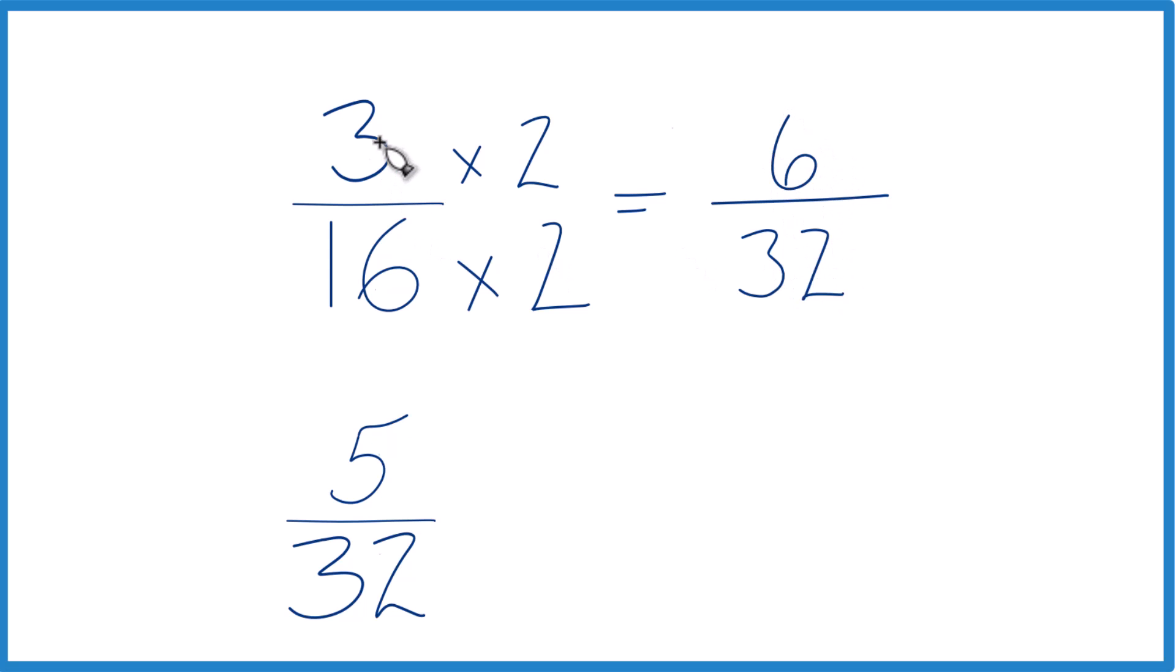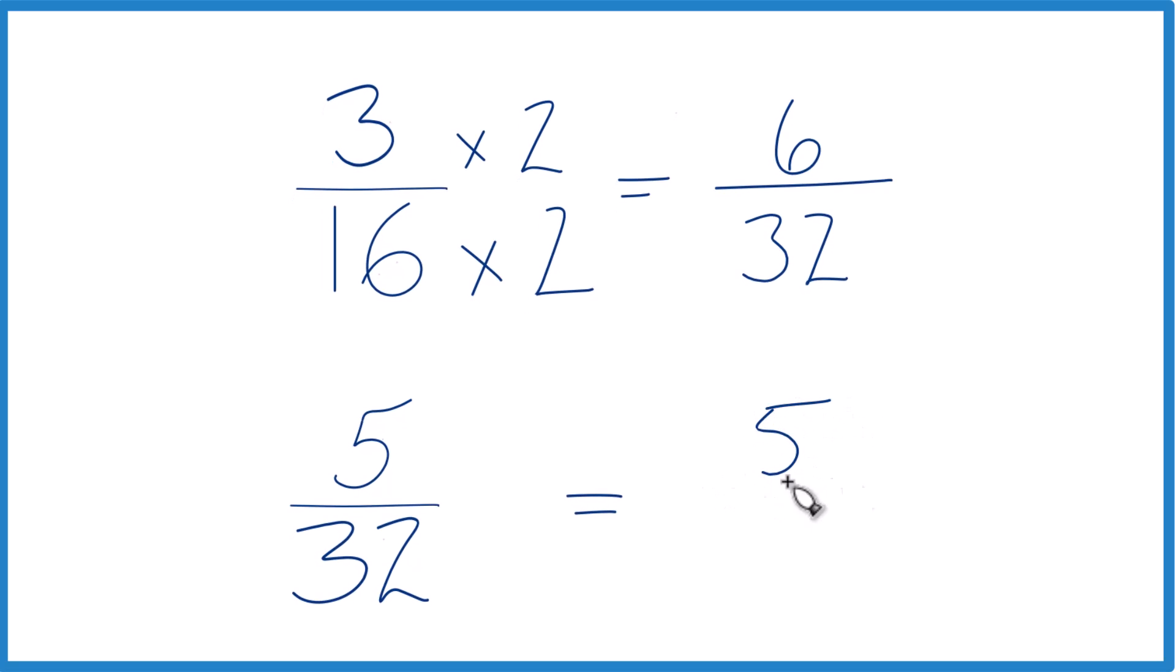So 6/32 and 3/16, they're the same. For 5/32, we just leave it like it is, because we already have 32 here in the denominator. So 5/32, and now we have the same denominator.